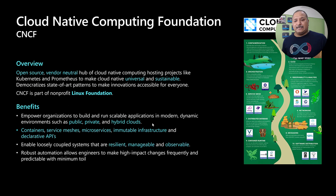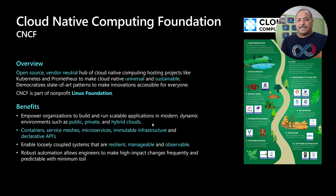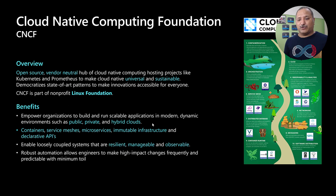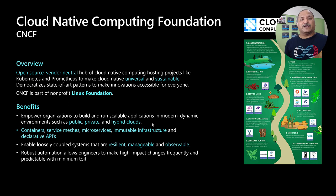Some of the benefits we get are that organizations can build and run scalable applications in modern dynamic environments such as public, private, and hybrid clouds. It also standardizes things like containers, service meshes, microservices, immutable infrastructure, and declarative APIs. By making this a standard across different providers, it makes it easier to integrate different service providers and tools and technologies. It also enables us to build loosely coupled systems which are more resilient, highly observable, and manageable, which helps in adopting cloud technologies.